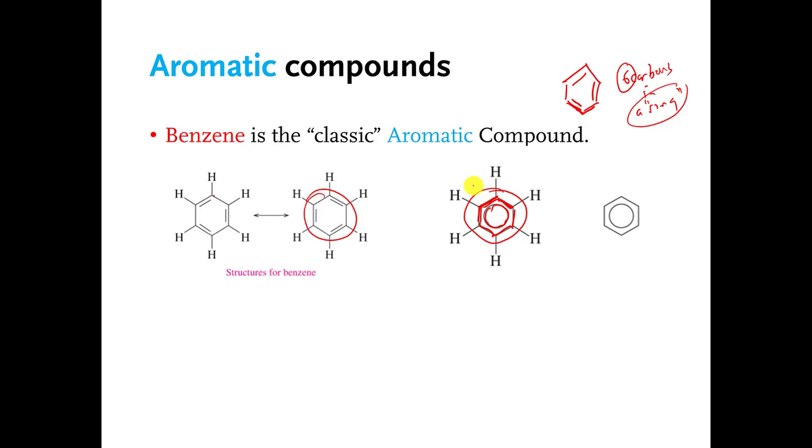That circle is supposed to say, look, those double and single bonds are not really fixed in place, they're racing around inside. So if you see this, that also means aromatic functional group, and that is basically all I want to talk about in this video.